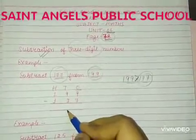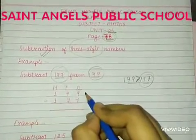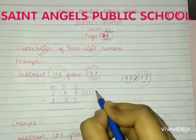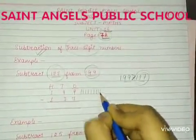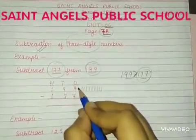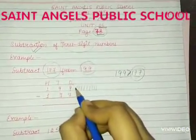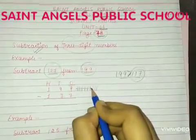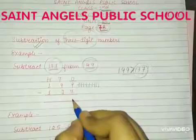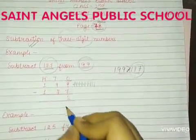First, subtract the ones place digit, that is 9 minus 7. Draw 9 lines in front of 9. We have to subtract 7, so cut 7 lines out of the 9 lines drawn. Count all the remaining lines — there are 2. Write 2 here. So, 9 minus 7 is equal to 2.